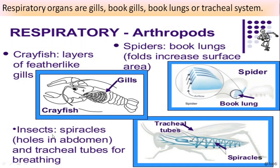In insects like cockroach, grasshoppers, and honeybee, there are exterior pores called spiracles present on the abdomen. These pores open into tubular structures called tracheal tubes. Through these openings, oxygen and carbon dioxide are exchanged. The oxygen is carried by the tubes and directly comes in contact with the tissues or cells in the body cavity. The respiratory structures are book gills, book lungs, and tracheal system.